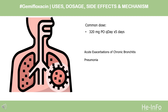Dose: Acute exacerbations of chronic bronchitis: 320 mg PO once daily for 5 days. Limitations of use: reserve fluoroquinolones for patients who do not have other available treatment options for acute bacterial exacerbation of chronic bronchitis. Pneumonia, community-acquired — multidrug-resistant S. pneumoniae, K. pneumoniae, M. catarrhalis: 320 mg PO once daily for 7 days.